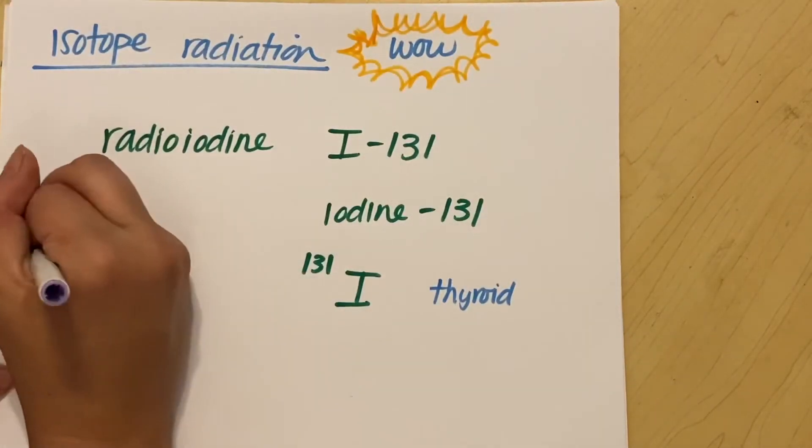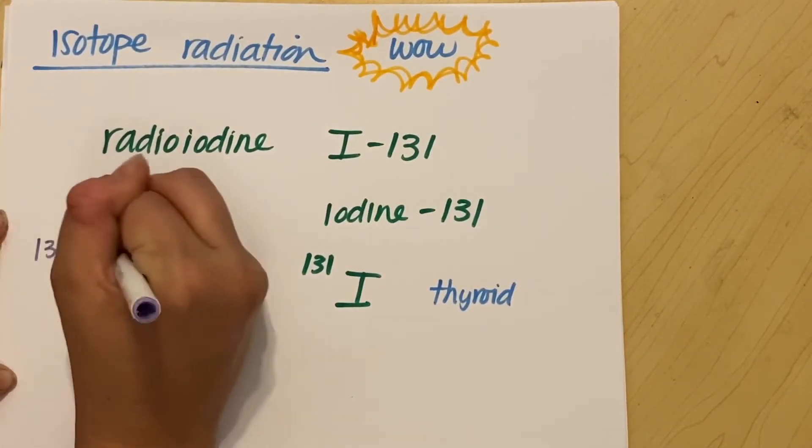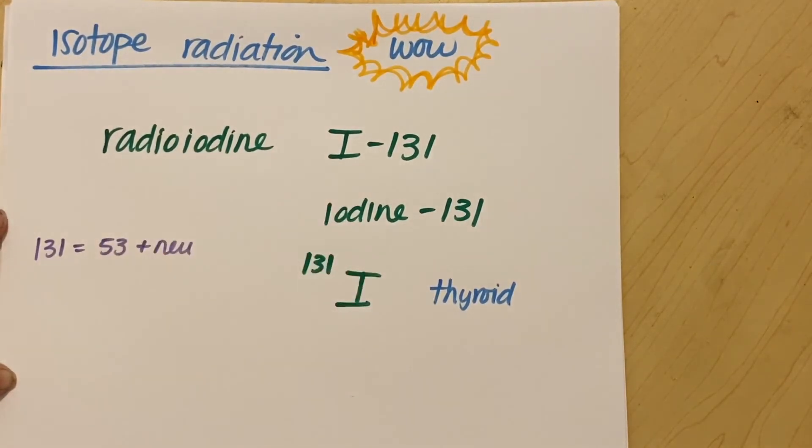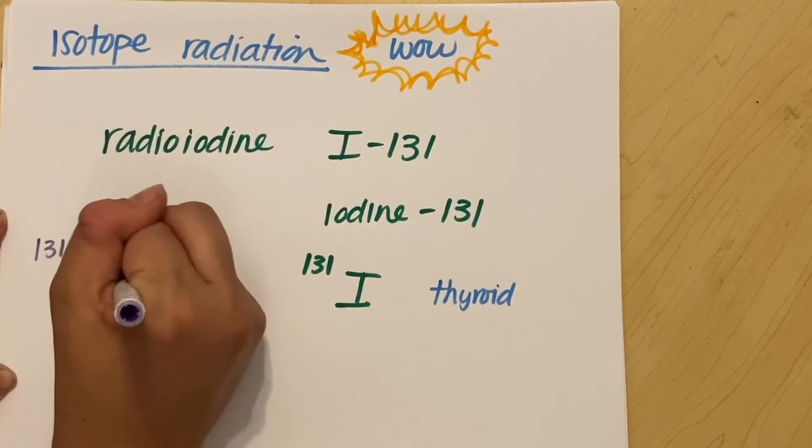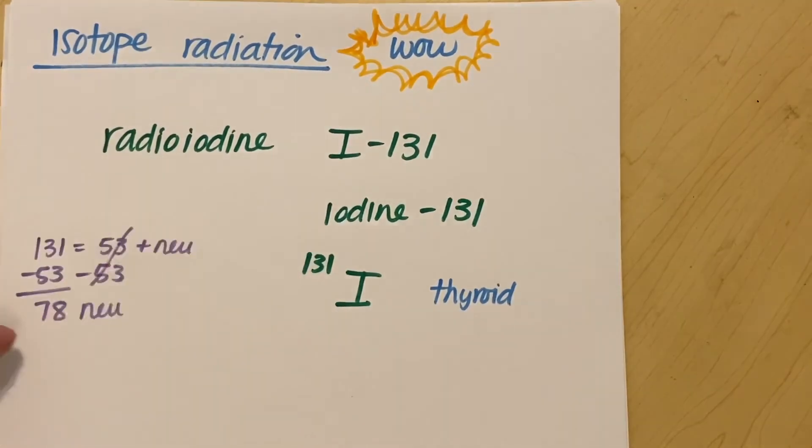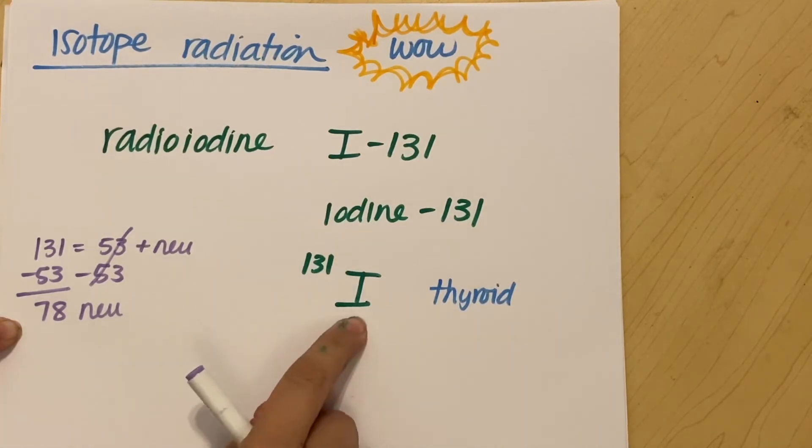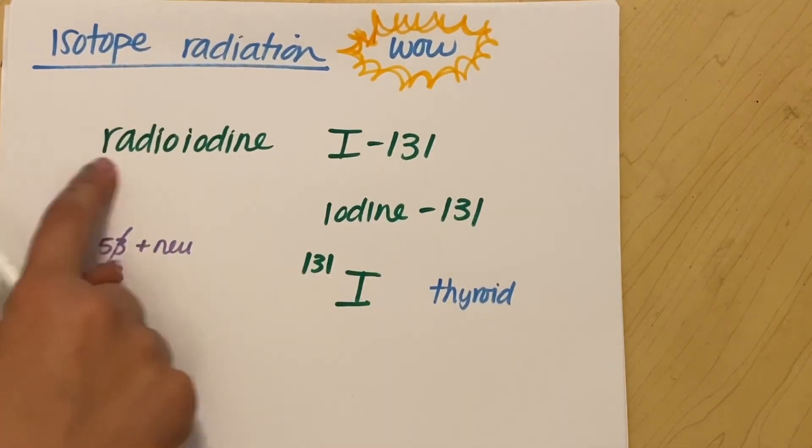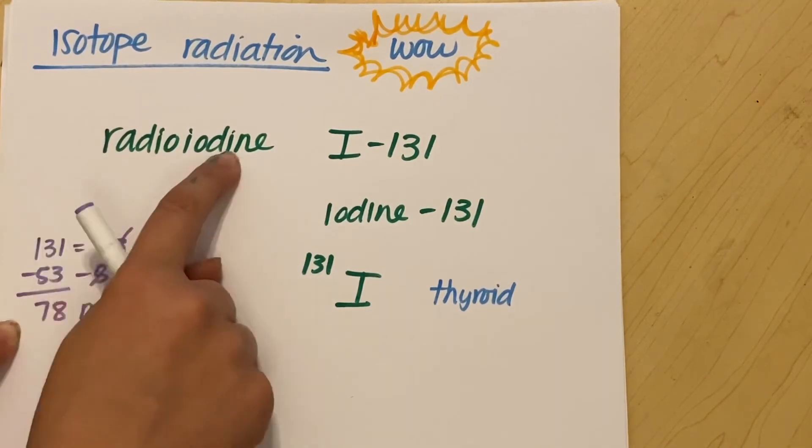So I know for this one, 131 equals 53 plus my number of neutrons. So minus 53, and I get 78 neutrons. So the specific iodine that has exactly 78 neutrons gives me a mass of 131, and this specific iodine is radioactive. Radioiodine.